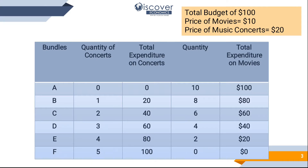Bundle C tells us we consume two concerts, spending $40 on concerts and $60 on movies. Bundle D tells us $60 on concerts and $40 on movies. Bundle E tells us $80 on concerts and $20 on movies. Bundle F tells us $100 on concerts and $0 on movies. These bundles are clear and you pick any one of them, because this pattern allows you to consume 100% of your income — nothing is left over and nothing exceeds it.